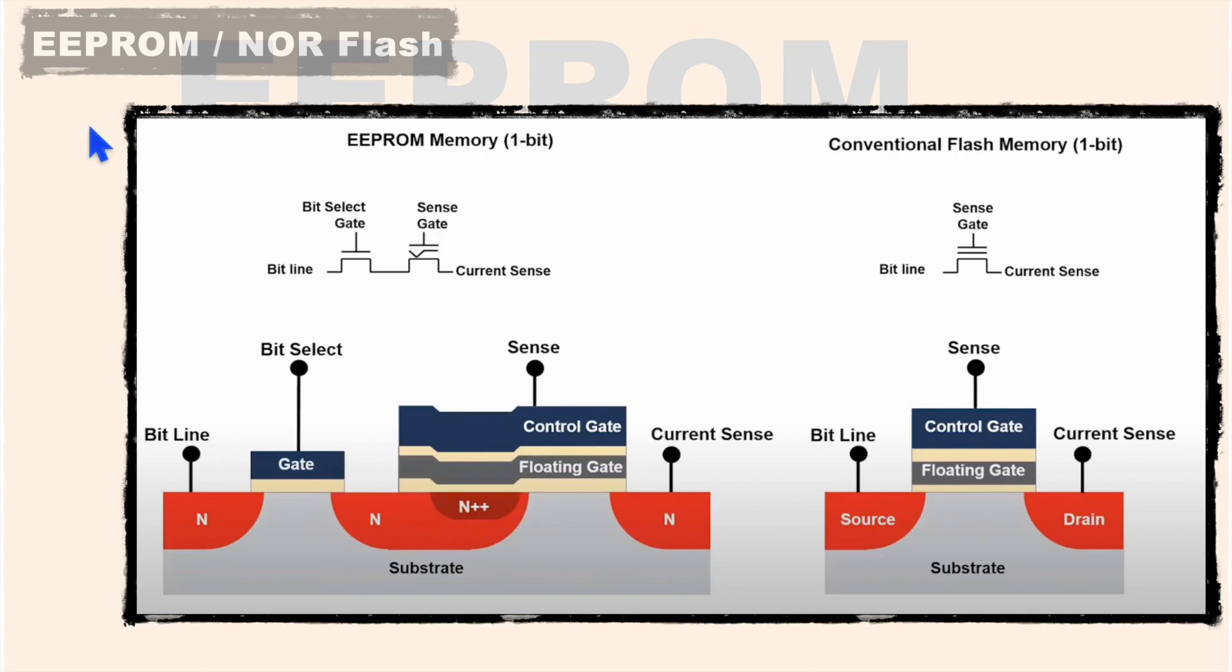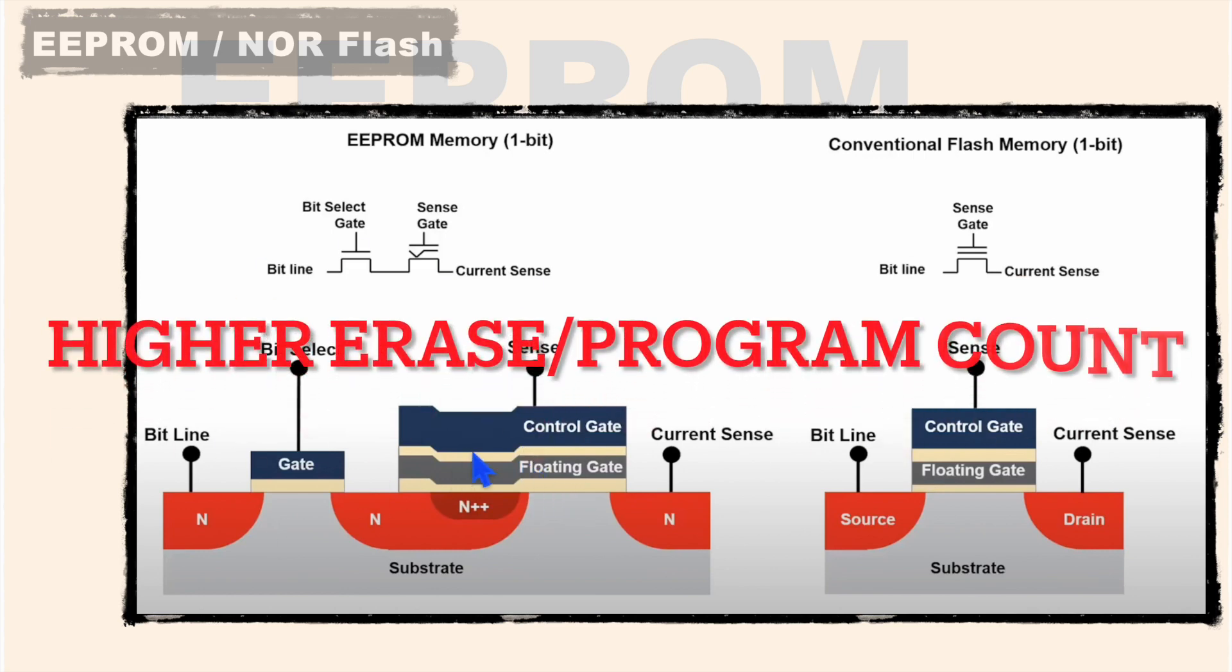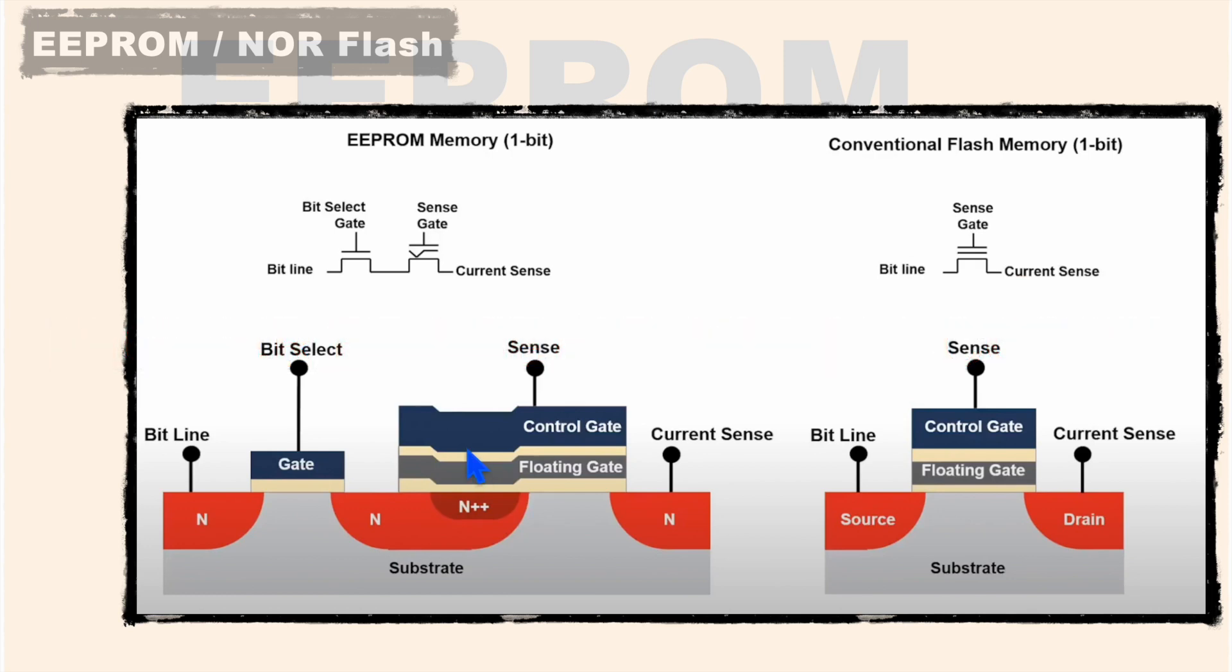And if you see the difference between EEPROM memory cell and flash memory cell, EEPROM has two gates while NOR flash memory has only one gate, which makes EEPROM suitable for higher EPROM count as well as for very fast erase time.